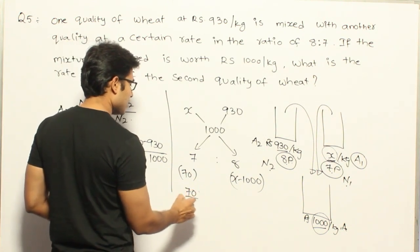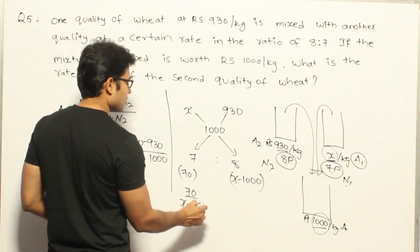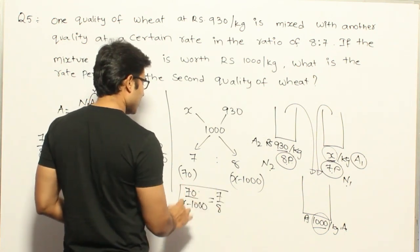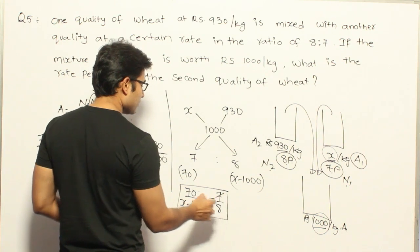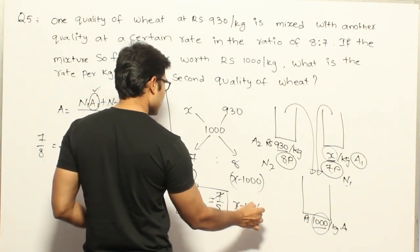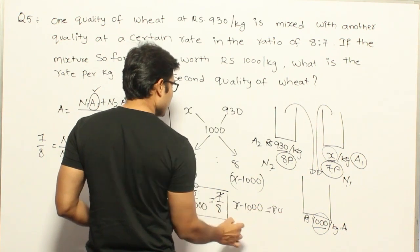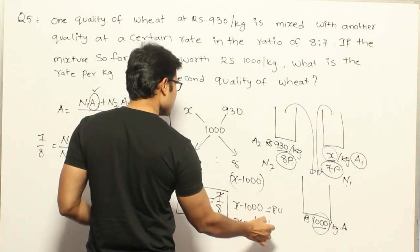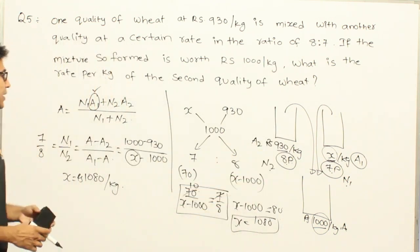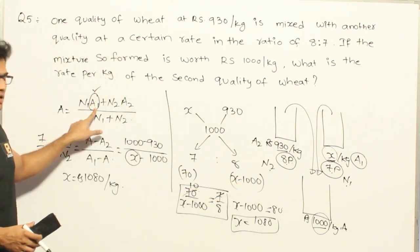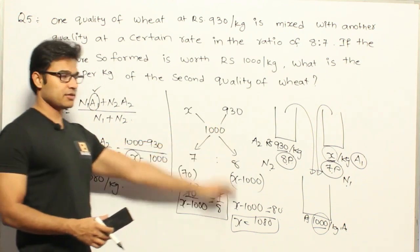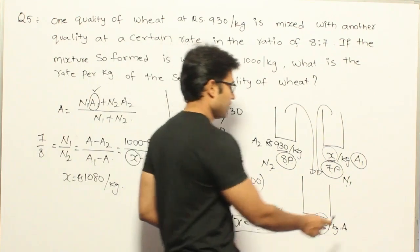Again if you apply this, see, 70 by X minus 1000 equal to 7 by 8, right? So again if you apply it, it is going to be 1080. X minus 1000 equal to 80, which means X equal to 1080. So whichever way you feel comfortable, you can solve it, either by using the formula, you can find out the initial formula, or if you remember that ratio formula you can find it out, or you can use this diagram and you can find it out. Fine.